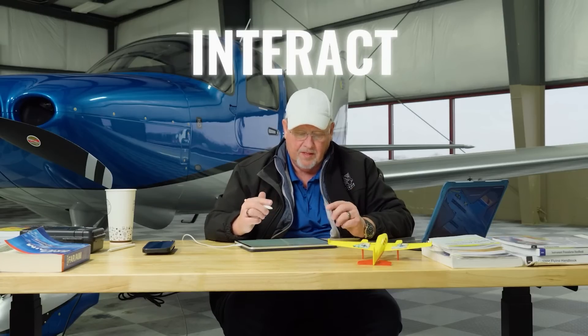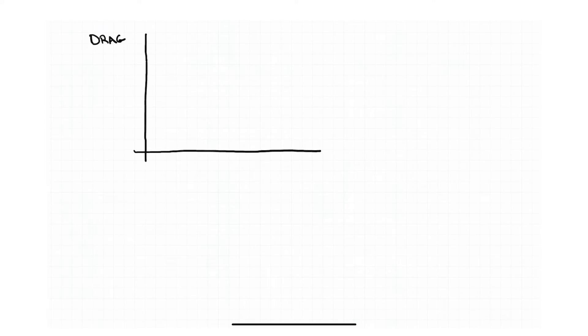Okay, now that we understand parasite and induced drag, let's take a look at how they interact together on a drag curve. We're going to draw this out. The vertical axis here represents total drag, and the horizontal axis represents velocity, or we could just call it speed.